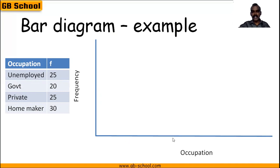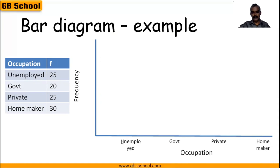Next step is to mark the scale of divisions. In occupation we have four categories: unemployed, government employed, private, and homemakers. For the frequencies, the lowest is 20 and the highest is 30.